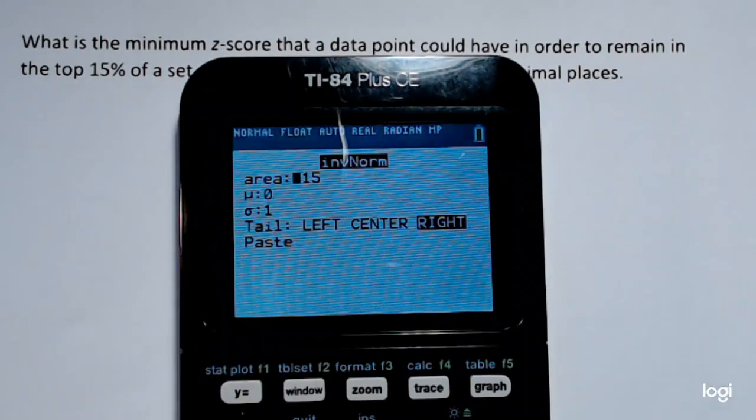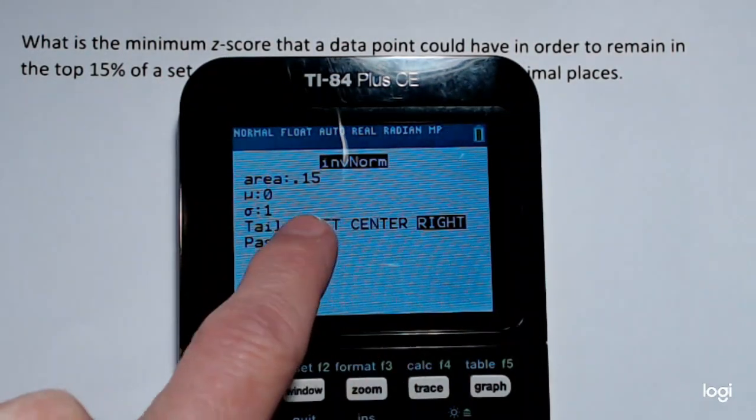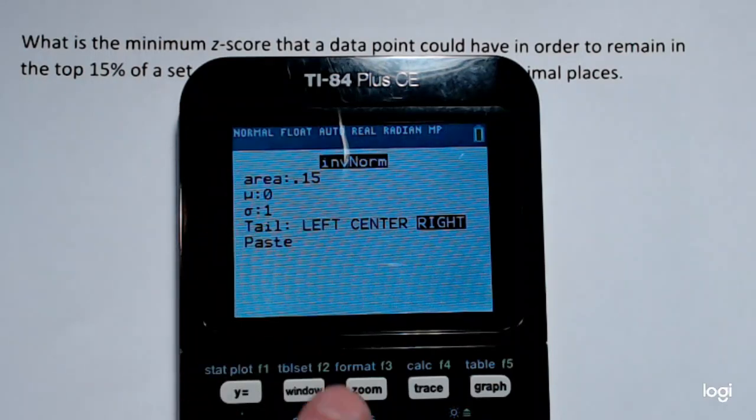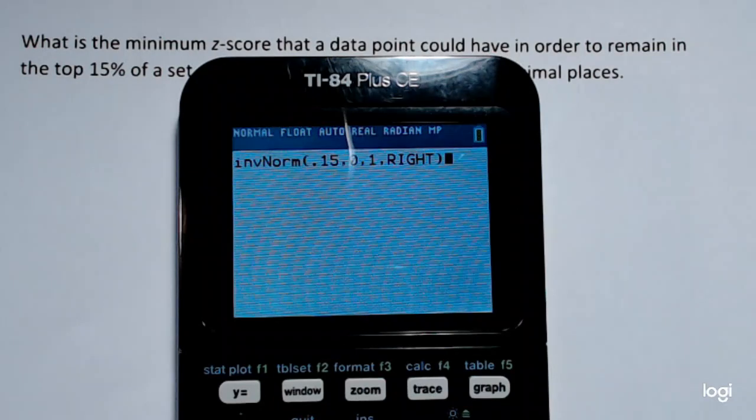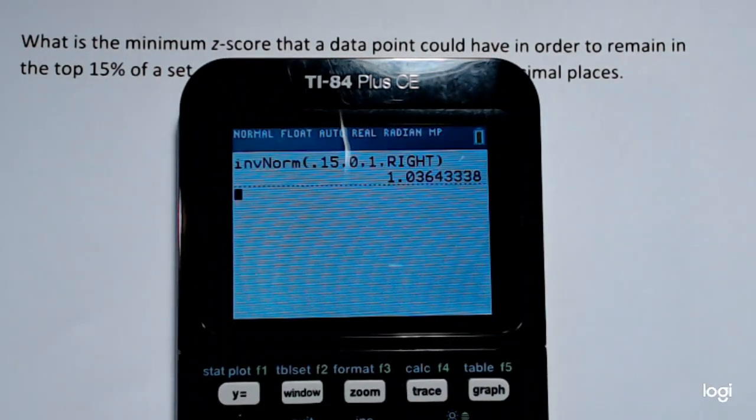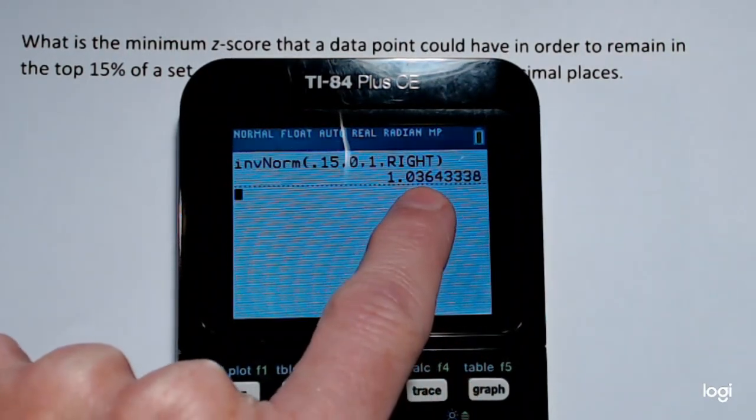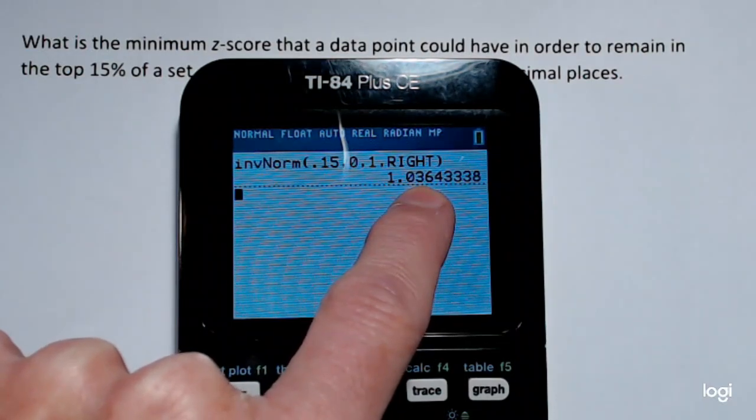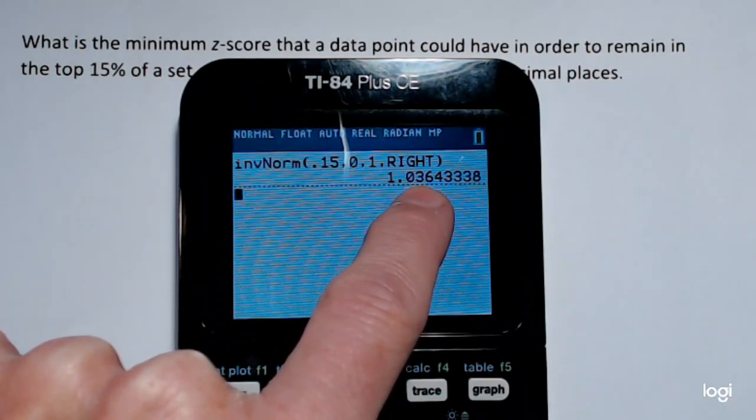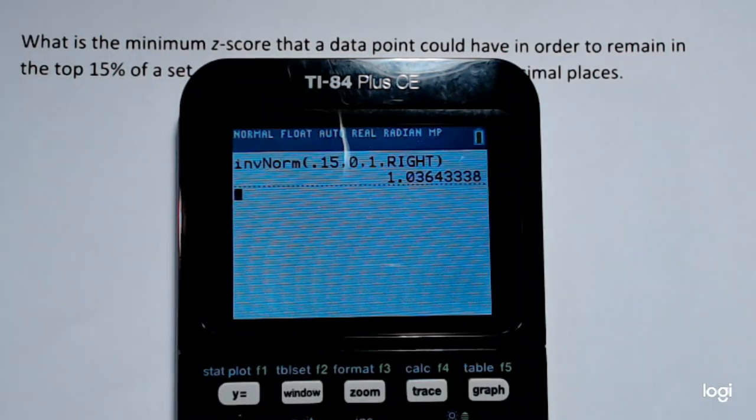So if I put in 0.15 and keep that as right and leaving this as 0 and 1, which is for standard normal, enter and enter again. We'll see rounding to two decimal places, I get a z-score of 1.04, which is the same as I got when I used the table.